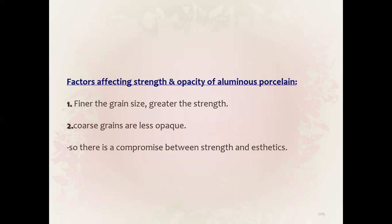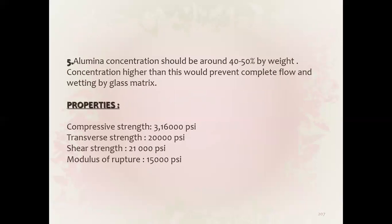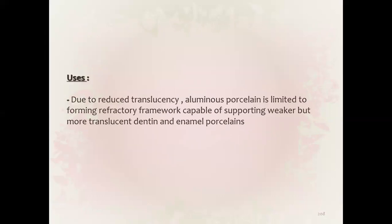Glass powder size less than 40 microns softens and flows more easily around alumina grains, producing high-density centers. Rounded grains are preferred over angular ones, as angular ones interfere with glass phase flow, producing flaws around grains and reducing strength. Properties: compressive strength 316,000 psi, transverse strength 20,000 psi, shear 21,000 psi, modulus of rupture 15,000 psi. Used as refractory framework capable of supporting weaker but more translucent dentine and enamel portions.